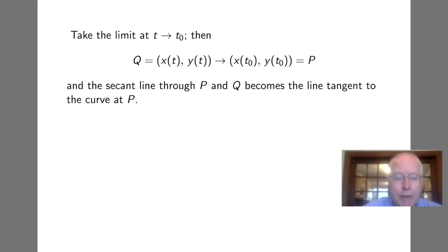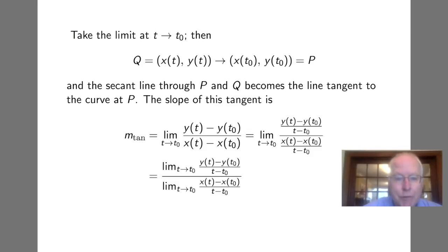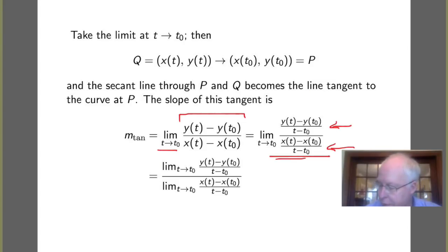When we take that limit, the secant line becomes the line tangent to the graph at P. So the slope of the tangent is the limit of the slope of the secant line as t goes to t₀. Now because these are functions of t, we make the following algebraic step: we divide the top and the bottom by t minus t₀. This is equivalent to multiplying by one. You can check that a little algebra reduces this expression to the one we started with.